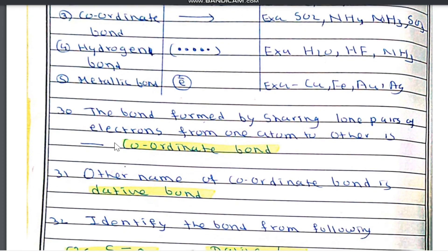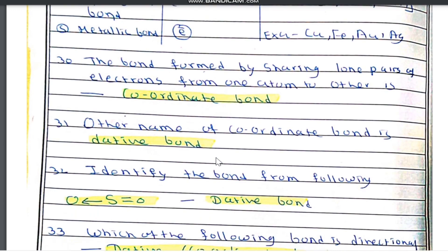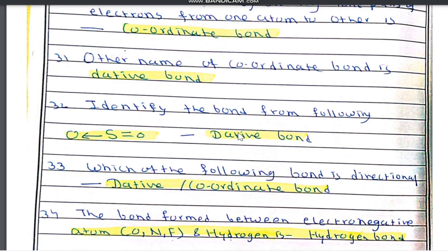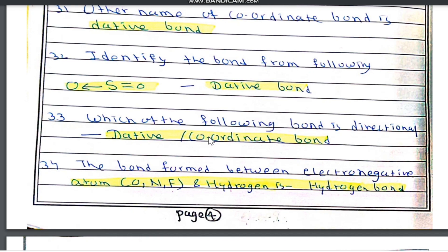The bond formed by sharing of a lone pair of electrons from one atom to another is known as a coordinate bond, also known as the dative bond. Question number 31: it is also known as the dative bond. In an example shown, an arrow denotes the dative bond. The bond which is directional is the dative bond. The bond formed between an electronegative atom (oxygen, nitrogen, or fluorine) and hydrogen is known as a hydrogen bond.